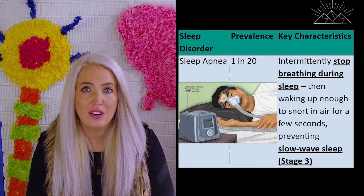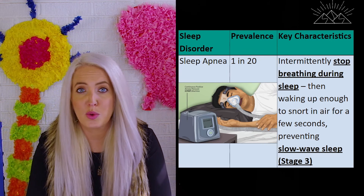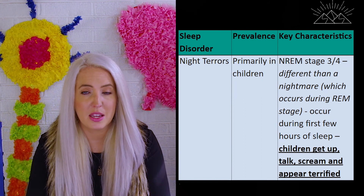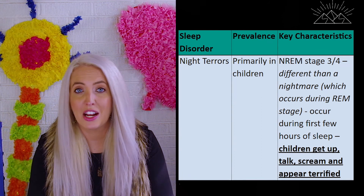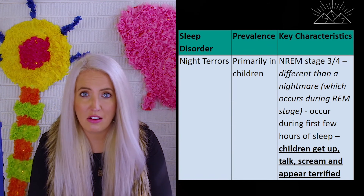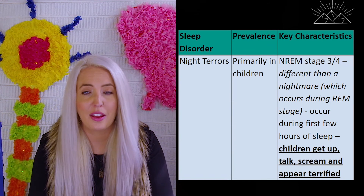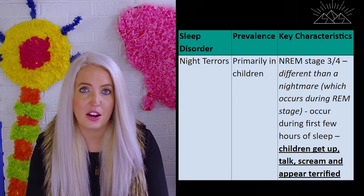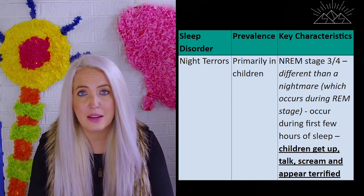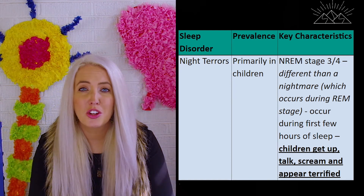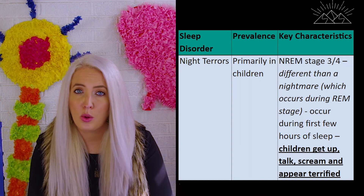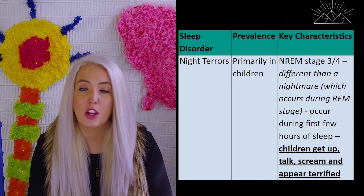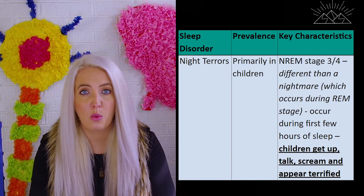Night terrors take place in stage three sleep and primarily happen in children because they spend more time in that deep sleep. Night terrors are when children might get up, walk around, and scream — they appear terrified but are not actually awake. In the morning, a child will have no memory of the night terror because it's happening in deep sleep. It is not a nightmare. Children typically grow out of these as they get older and need less stage three sleep, and they can often happen during a growth spurt.